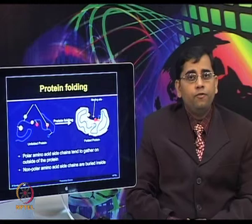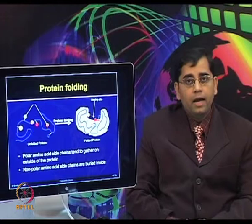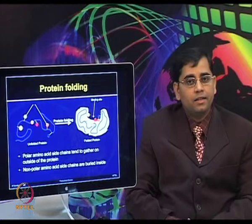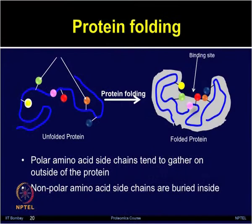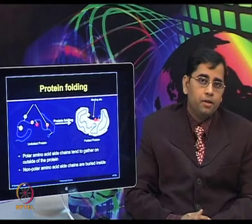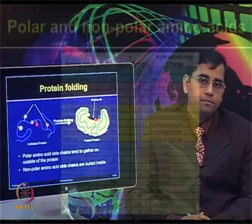The protein folding process is governed by the distribution of polar and non-polar amino acids. The polar side chains tend to arrange themselves near the outside of the molecules; for example, arginine, glutamine, and histidine. The non-polar side chains have a tendency to cluster in the interior of molecules; for example, phenylalanine, leucine, valine and tryptophan. This chart shows various amino acids which belong to polar and non-polar categories, and how they govern the protein folding process.